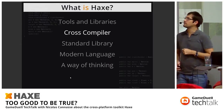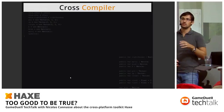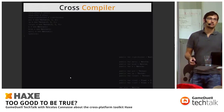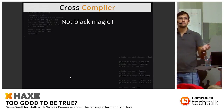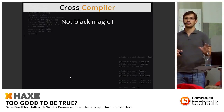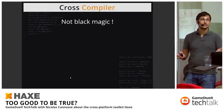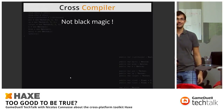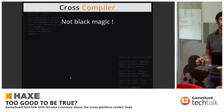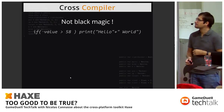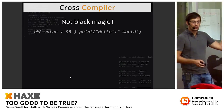Haxe runs with a cross-compiler — a compiler that cross-compiles your Haxe code for a given platform. It's not black magic. The first step is called lexing: you take the program string and separate it into tokens — keywords, special characters, operators, numbers. For example, 'if (value > 58) print(hello + world)' produces eleven tokens.